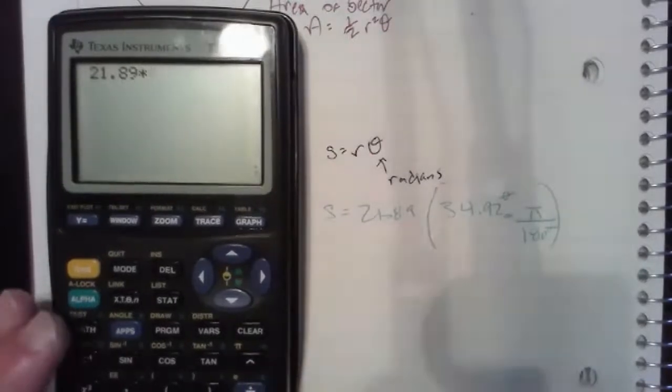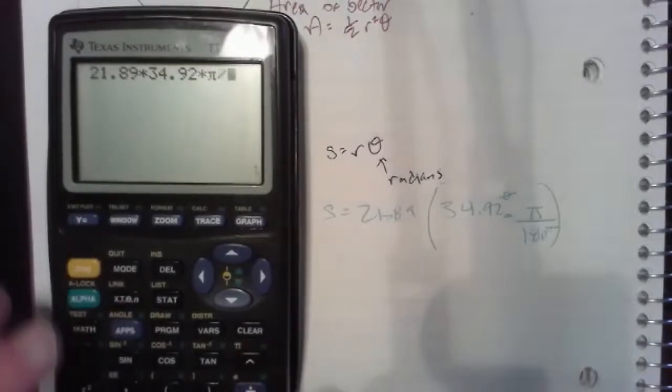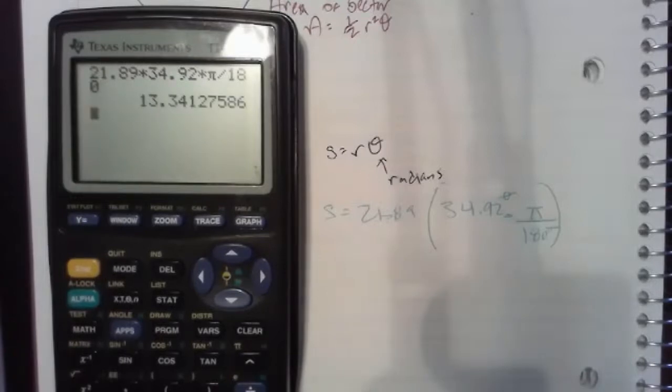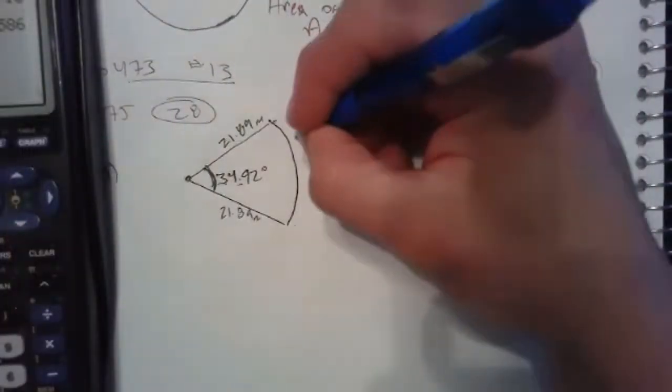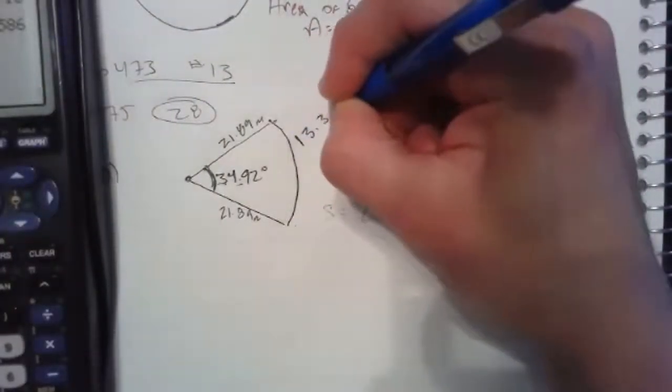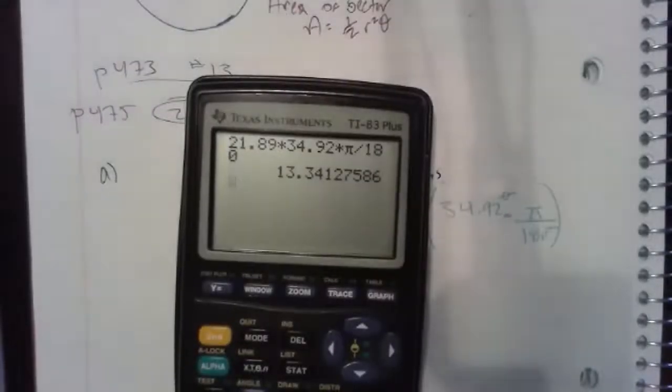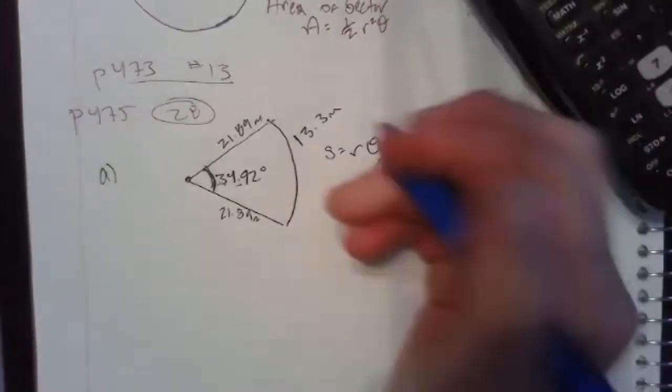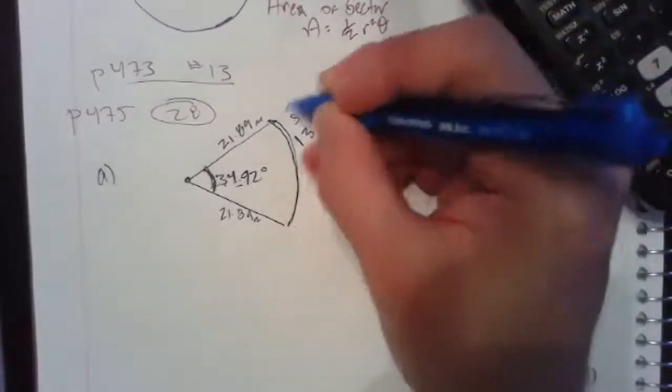So we have 21.89 times 34.92 times pi divided by 180, and the answer is about 13.3 meters. So this arc length here—just to check your work—the arc length here for the shot put is going to be 13.3 meters, and that answers part a.